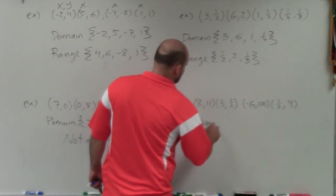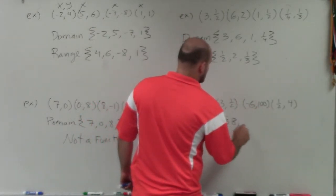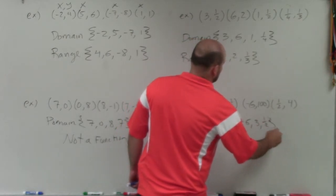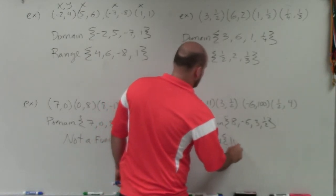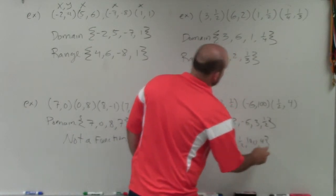Then let's go and get to the last one here. This one, the domain, again, set of all x values. So that's going to be 8, negative 6, 3, 1 half. And the range is going to be 11, 1 half, 100, and 4.